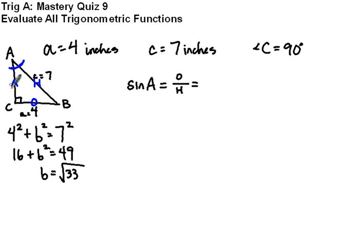Opposite over hypotenuse is then 4 over 7. The cosine of A is adjacent over hypotenuse. Do you have your SOHCAHTOA memorized yet? Adjacent to A is the square root of 33, and the hypotenuse is 7.